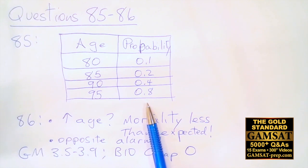Question 86 is equally straightforward: which of the following best helps explain why the observations differ from expected in the diagram? First, establish how the observed differs from expected. You notice the mortality for the observed is less than expected, so we're looking for reasons that older people live longer than expected.